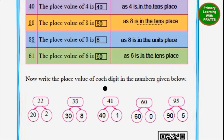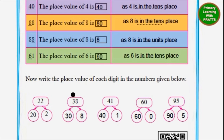Now write the place value of each digit in the numbers given below. Remember to set up T and U columns. For 22: T — 2 into 10 equals 20; U — 2 into 1 equals 2. For 38: T — 3 into 10 equals 30; U — 8 into 1 equals 8. For 41: T — 4 into 10 equals 40; U — 1 into 1 equals 1. For 60: T — 6 into 10 equals 60; U — 0 into 1 equals 0. For 95: T — 9 into 10 equals 90; U — 5 into 1 equals 5.